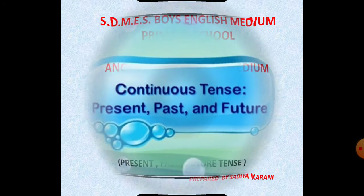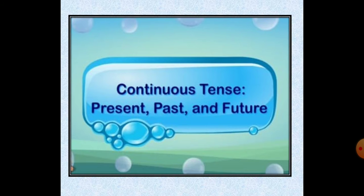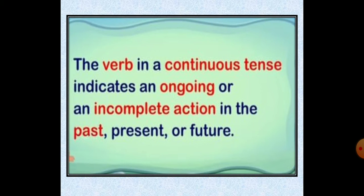So what's the Continuous Tense? Continuous ka meaning hota hai koi bhi action continue hona. We can say that it's a continuous action. The verb in a continuous tense indicates an ongoing or incomplete action in the past, present or future.